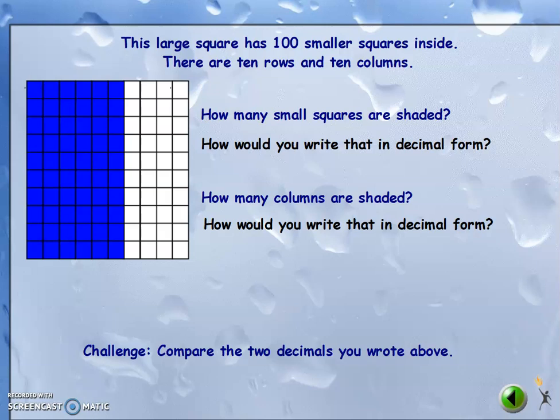This is Miss Melton to talk about decimals. This large square has a hundred smaller squares inside — there are ten rows and ten columns. How many small squares are shaded? There are a hundred total squares, and there are one, two, three, four, five, six rows shaded, so that would be 10, 20, 30, 40, 50, 60 small squares shaded.